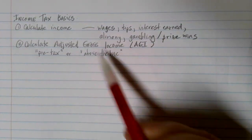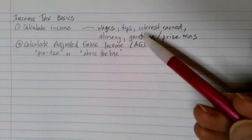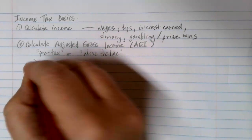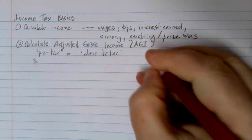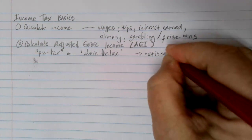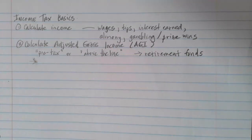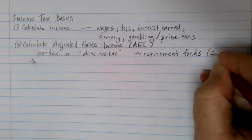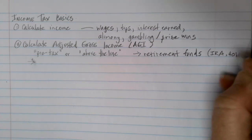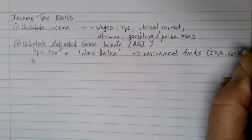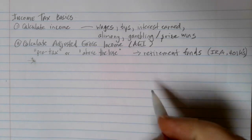Basically, the government is saying if you're spending your money in certain ways, we're going to decrease the amount of income that you have to pay taxes on. The most common thing that gets subtracted here is retirement funds. The government wants you to contribute to your retirement so that you can support yourself in your old age. You'll sometimes hear these called IRAs — individual retirement accounts. If you're working through a company, a lot of times they'll do something called a 401k or a 403b. Those are different types of retirement accounts that can be created.